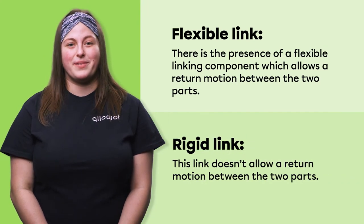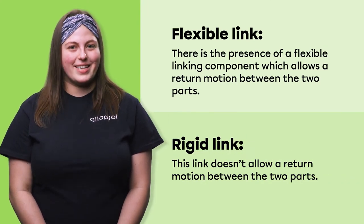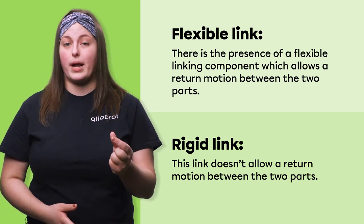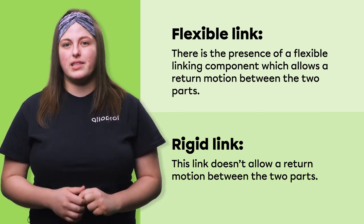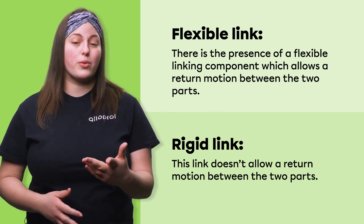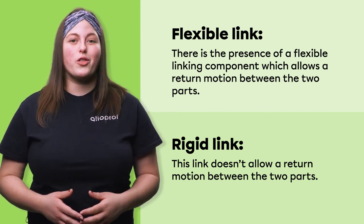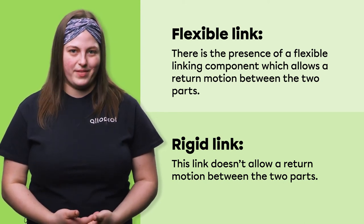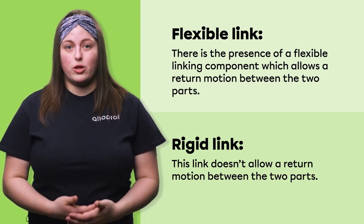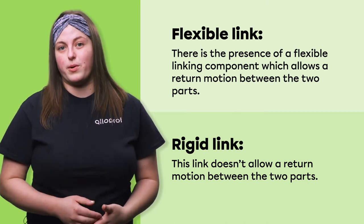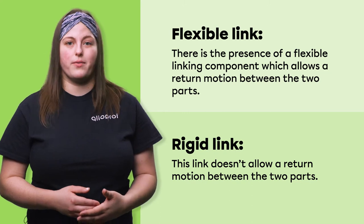A link can also be flexible or rigid. A flexible link contains a flexible linking component, such as a spring, a rubber band, or a piece of rubber. This linking component ensures a range of motion between the two parts through deformation. In other words, the parts of the object return to their initial position. In a rigid link, the two parts are directly connected to each other or with the linking component and do not allow a return motion.